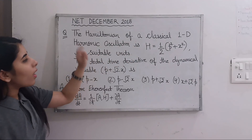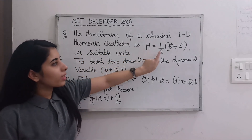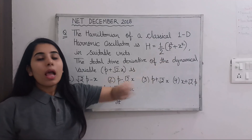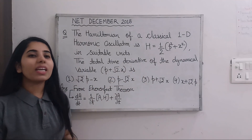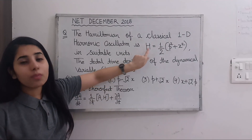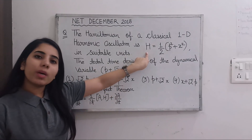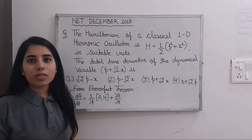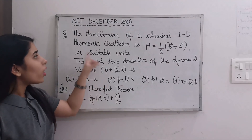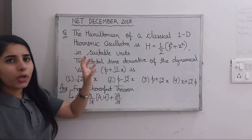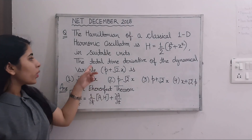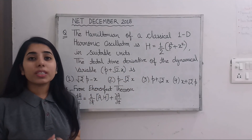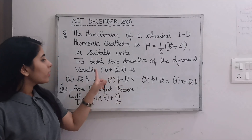The Hamiltonian expression is given. Now for the one-dimensional harmonic oscillator, when we look at the expression of the Hamiltonian, we get all the information we need. Next, we have to find the total time derivative of the dynamical variable p + √2x. You just need to find the total time derivative of this dynamical variable.